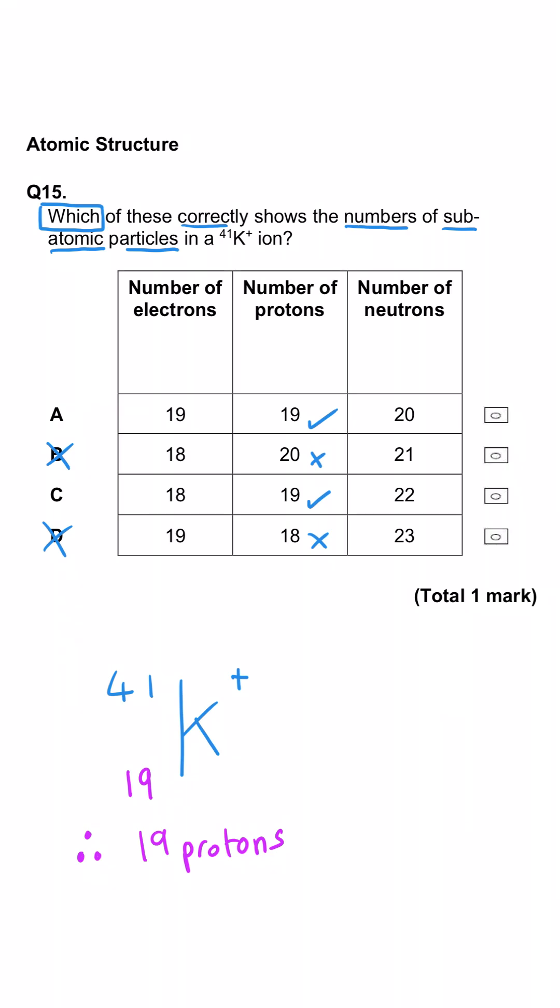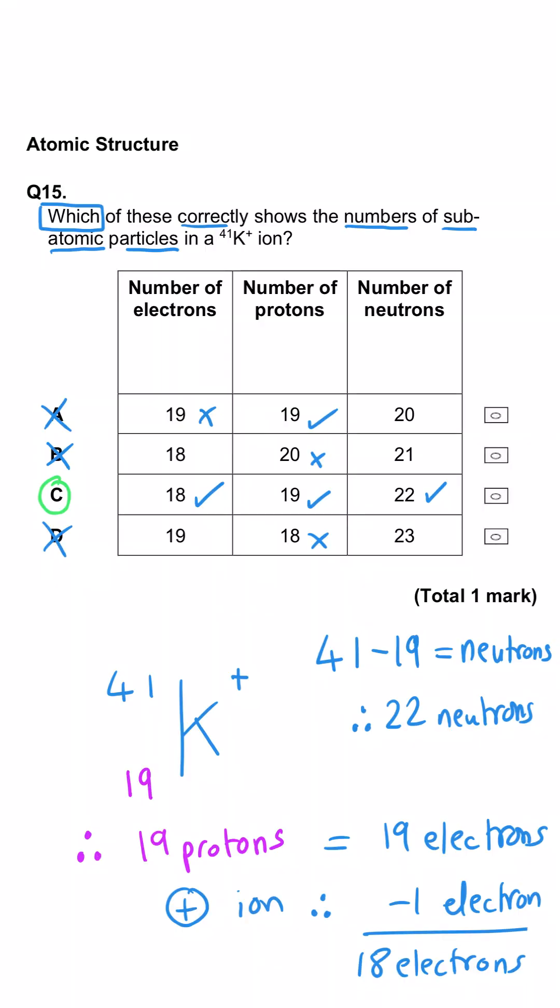Then we could check the electrons. It's an ion, so it will have one less electron than normal, so that will be 18, confirming that row C is the correct answer because A would be for an atom of potassium. We could also check the neutrons. Neutrons is 41 take away 19, so that gives us 22 neutrons, further confirmation that C is the correct answer.